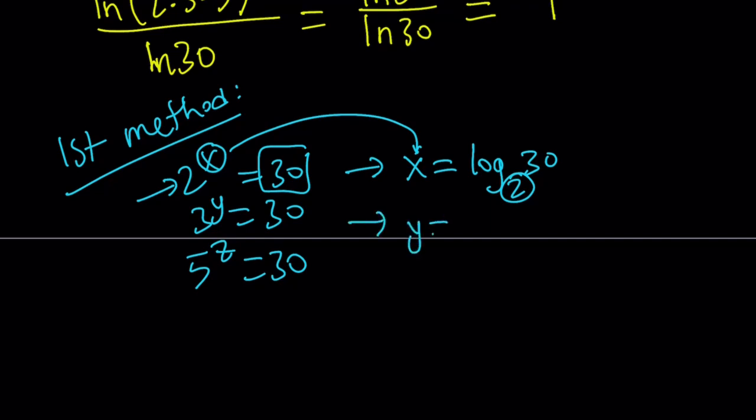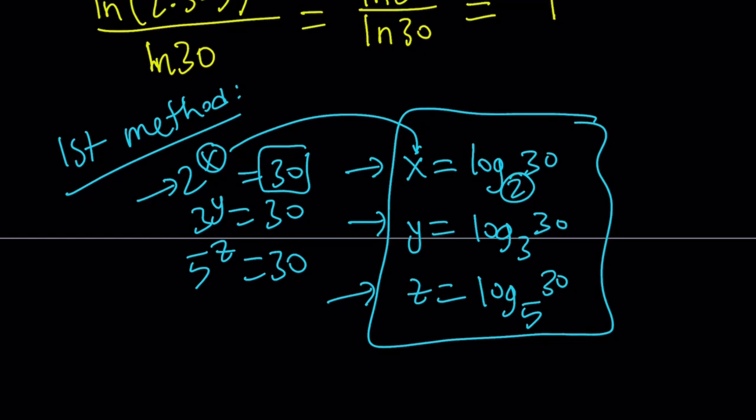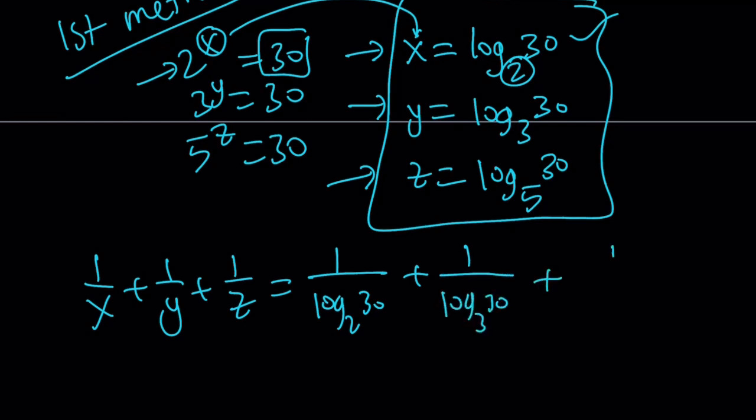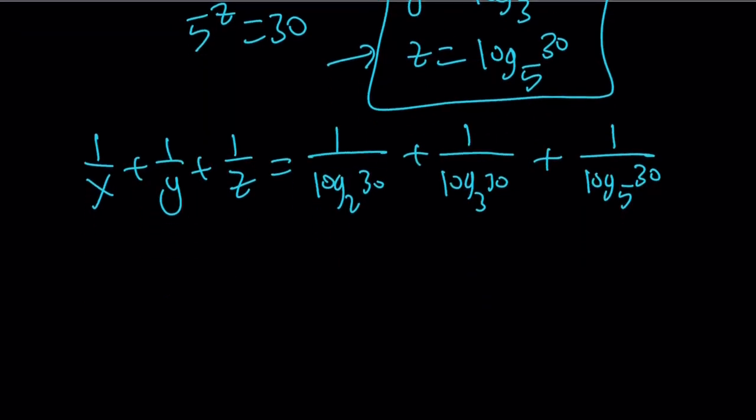So from here y is going to become log 30 base 3. Z is going to be log 30 base 5. So this is my x y z. So I can go ahead and evaluate 1 over x plus 1 over y plus 1 over z. Just find the reciprocals. What's the reciprocal of log 30 base 2? I don't know. I'm just going to write it 1 over something. Just that way. If you don't have any idea just keep writing it and hopefully something will click.